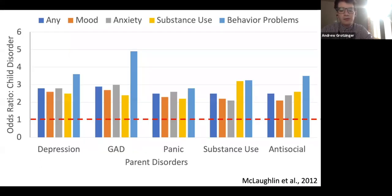In this 2012 study, they looked at these five disorders in parents on the x-axis, and the odds ratio of the child developing a particular disorder on the y-axis, with the null at one shown by the red dashed line. Consistent with those proband studies, children were at risk for really any disorder and not just the disorder present in the parent.